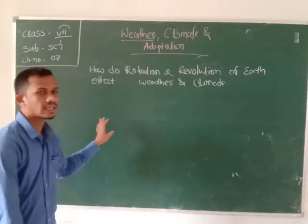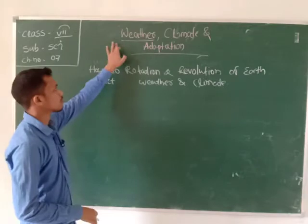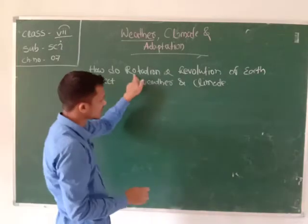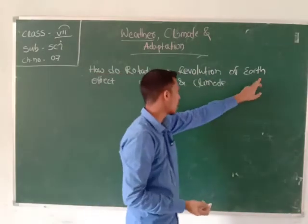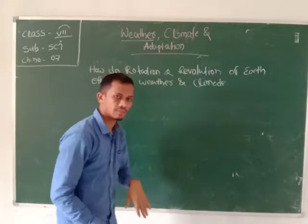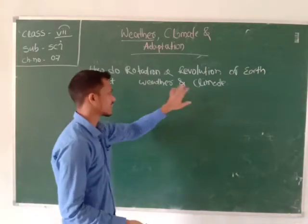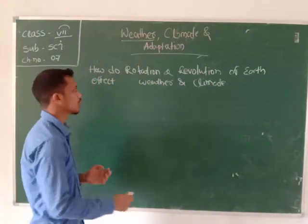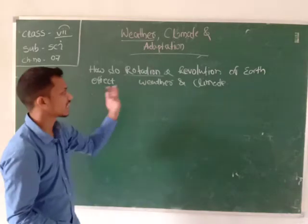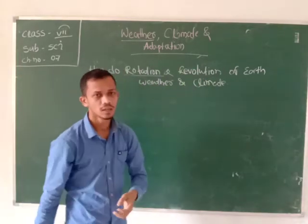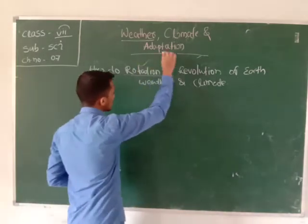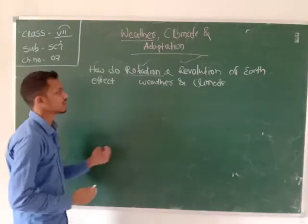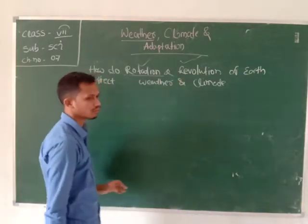So now we know something about weather and climate. Let's discuss one more topic: how do the rotation and revolution of the Earth affect weather and climate? We know that the Earth always rotates on its own axis and also makes a revolution around the sun.